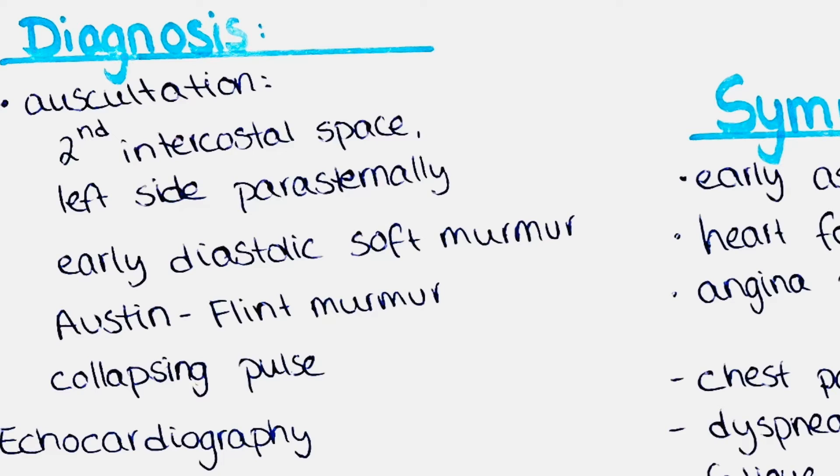Another sign is left ventricular hypertrophy. The left ventricle can also become thicker than normal in patients with aortic regurgitation, also due to the heart having to work harder to pump blood out of the heart.